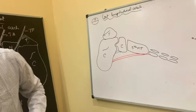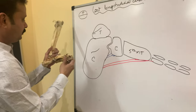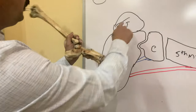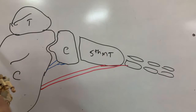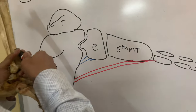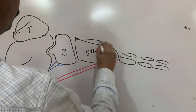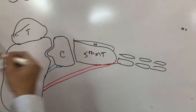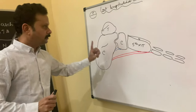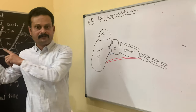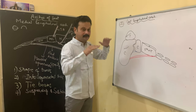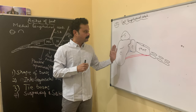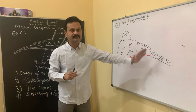Now the lateral longitudinal arch — if you see it on the skeleton, this one is the calcaneum, this is the talus, this is the cuboid, and these are the 4th and 5th metatarsal bones. This arch is considerably lower than the medial longitudinal arch because it represents a small arc of a big circle. Since fewer bones are taking part, rigidity is the feature of this arch.